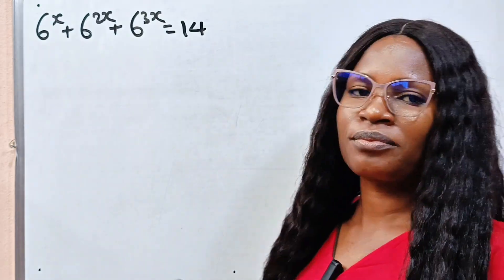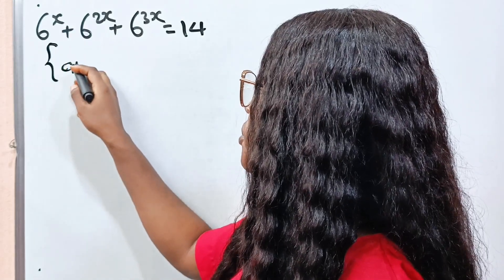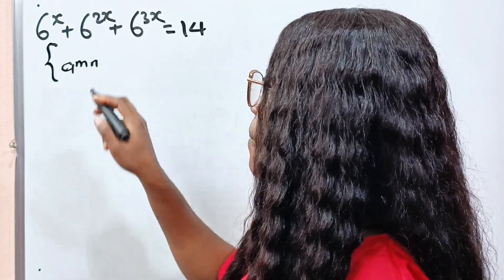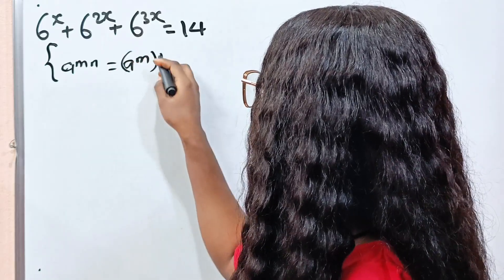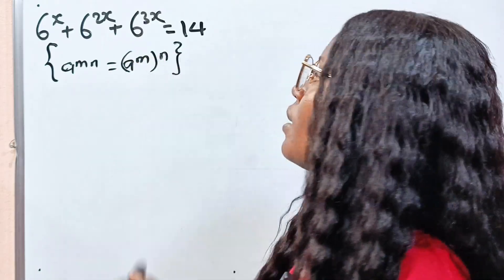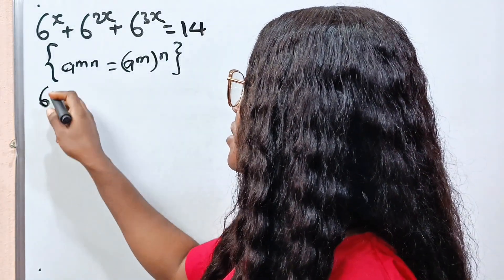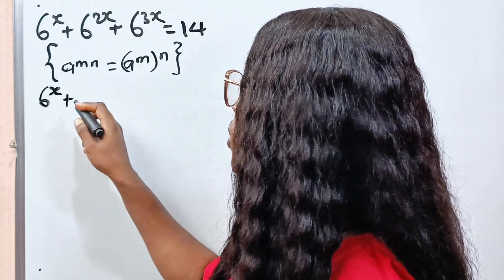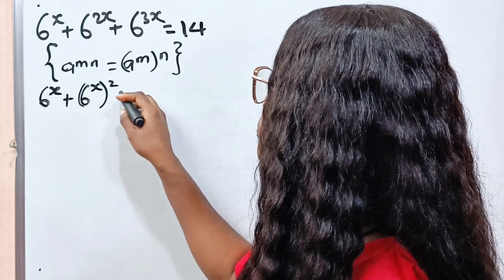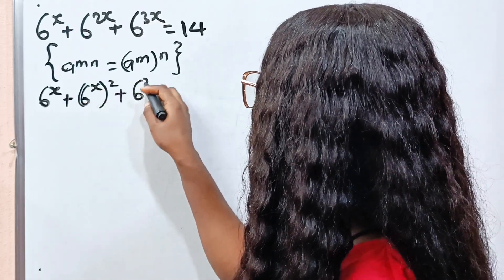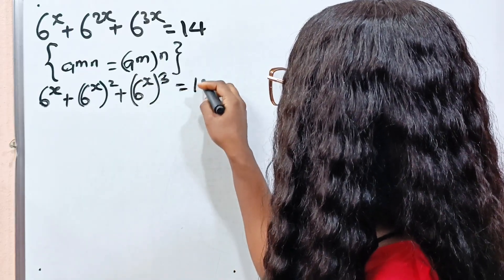First of all, I want us to remember that a to the power of m multiplied by n is equal to a to the power of m raised to the power of n. So we can write this as 6 to the power of x, plus 6 to the power of x raised to the power of 2, plus 6 to the power of x raised to the power of 3, is equal to 14.